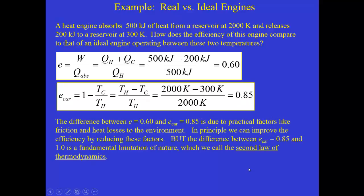And again, I want to emphasize the difference between those two, that's due to these practical factors like friction and heat losses. And in principle we can improve that 60%, but we can never get any higher than 85% because that is a fundamental limitation of turning thermal energy into work. The second law of thermodynamics tells us that there's an upper limit on that and that's why this 0.85 is less than 1.